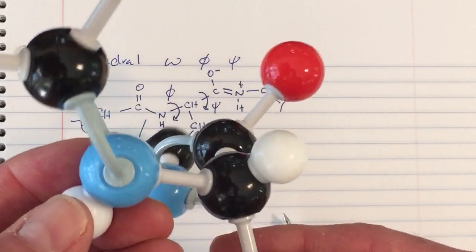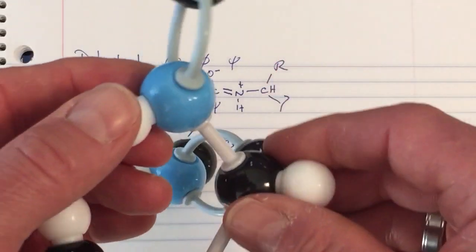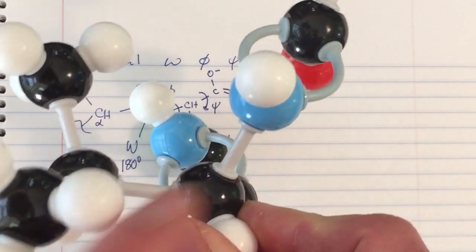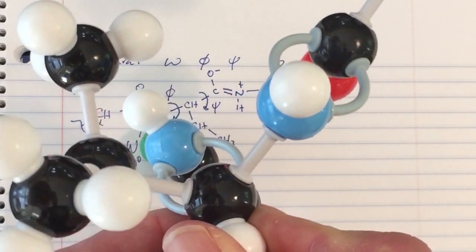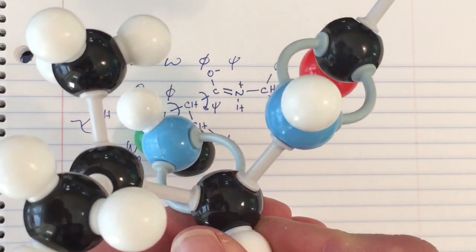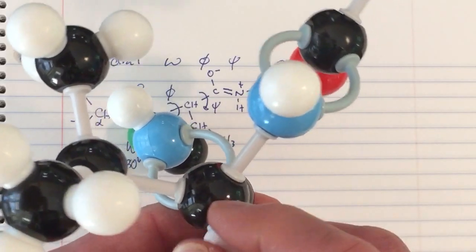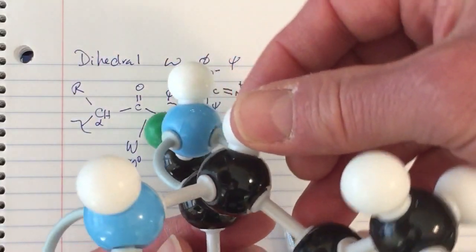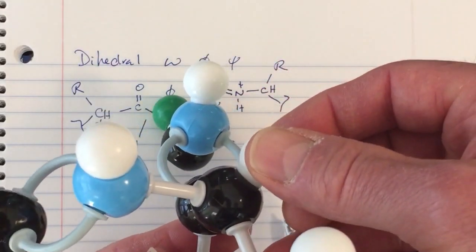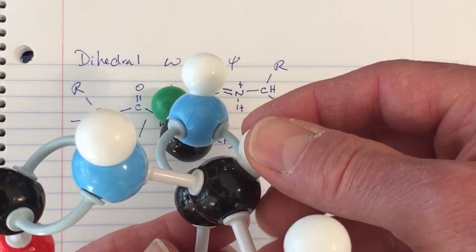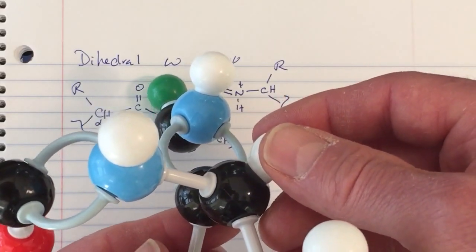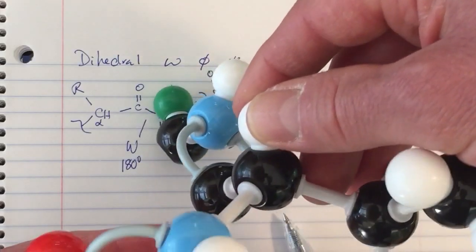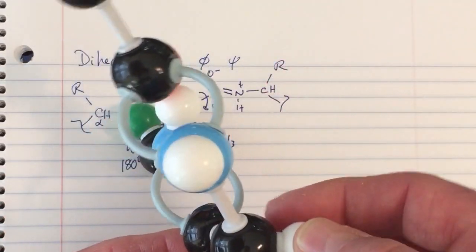Moving on to the next dihedral angle, we're looking from the alpha carbon to the carbonyl carbon, and we define the dihedral angle based on the relationship of the two amide nitrogens. Here this is a negative value of Psi, and if we rotate around this bond we'll see a positive value for Psi. Psi can adopt both positive and negative values, but it avoids certain values.